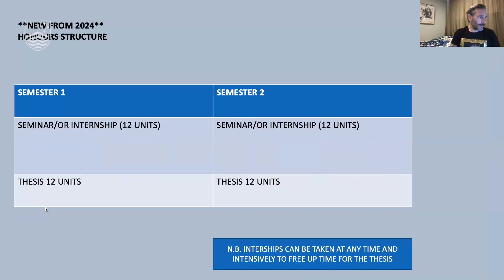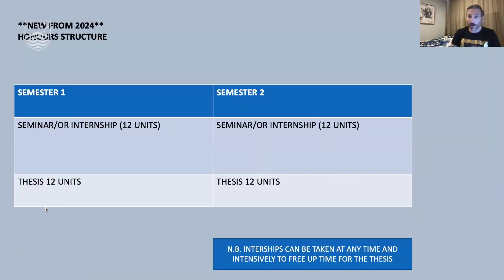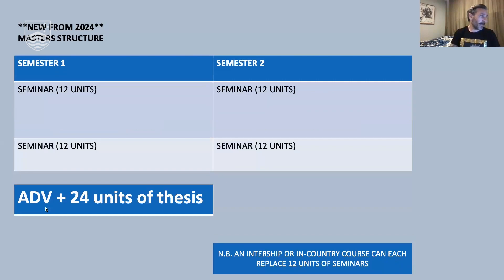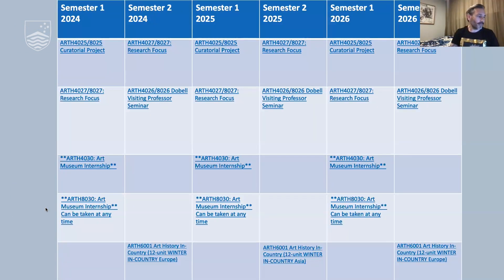We have a one-year honours program that can lead on to further study. We also have a Master of Art History and Curatorial Studies, which can be a year-long full-time course or taken over a longer time, offered as a series of seminars. An in-country course is offered for that program each year, and an internship can be taken as part of it too. There's a lot of information, so it's probably best if I address any questions you have directly. I'll hand back to my colleagues. Thank you.